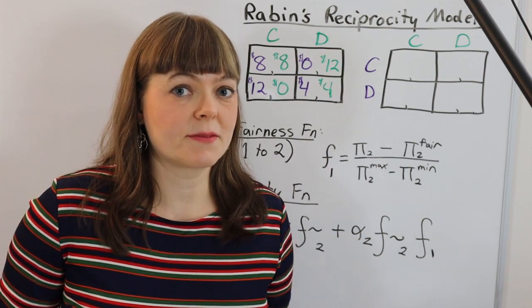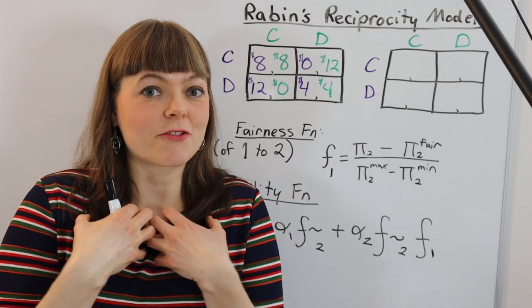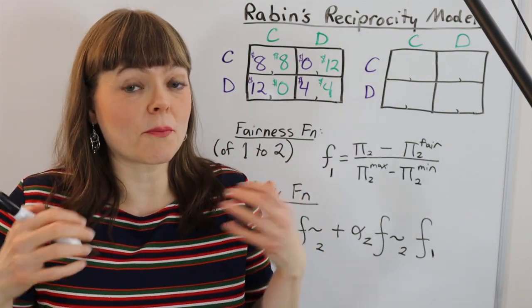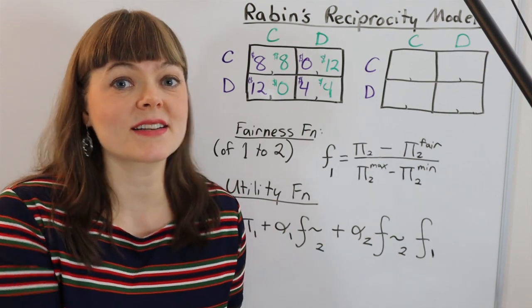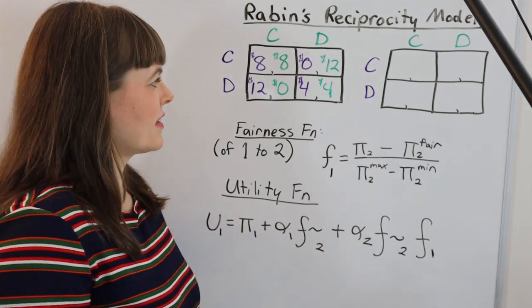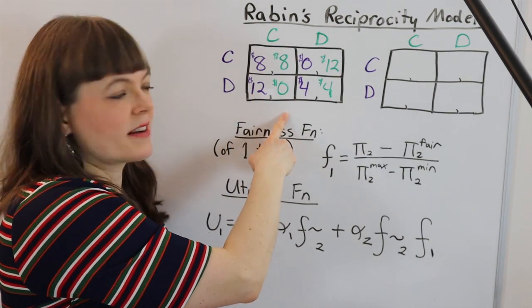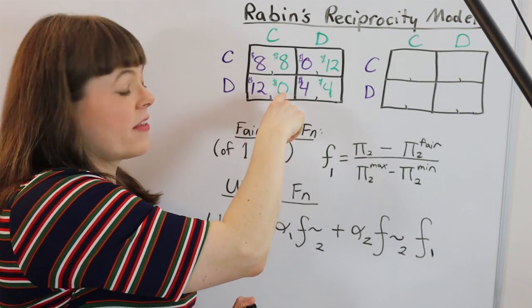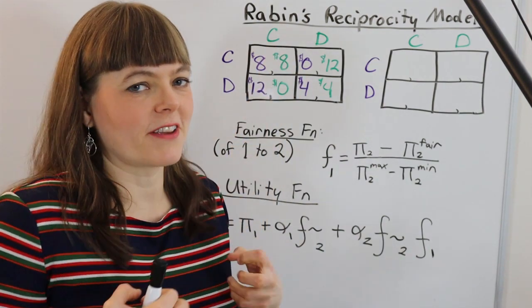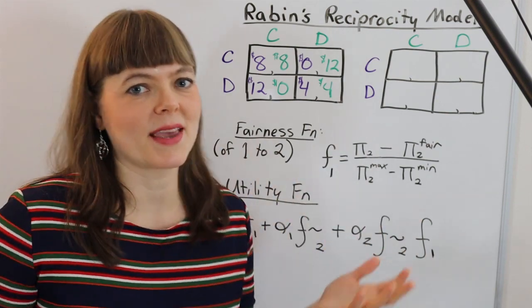So what is reciprocity to begin with? Reciprocity is getting utility from being nice to somebody who's nice to you and also positive utility from being mean to someone who's mean to you. In other words, if we end up in a situation like this where one person has a lot and the other doesn't have much, then the person who got zero is going to get a positive feeling if they punish that other person at some point, maybe in the next round.